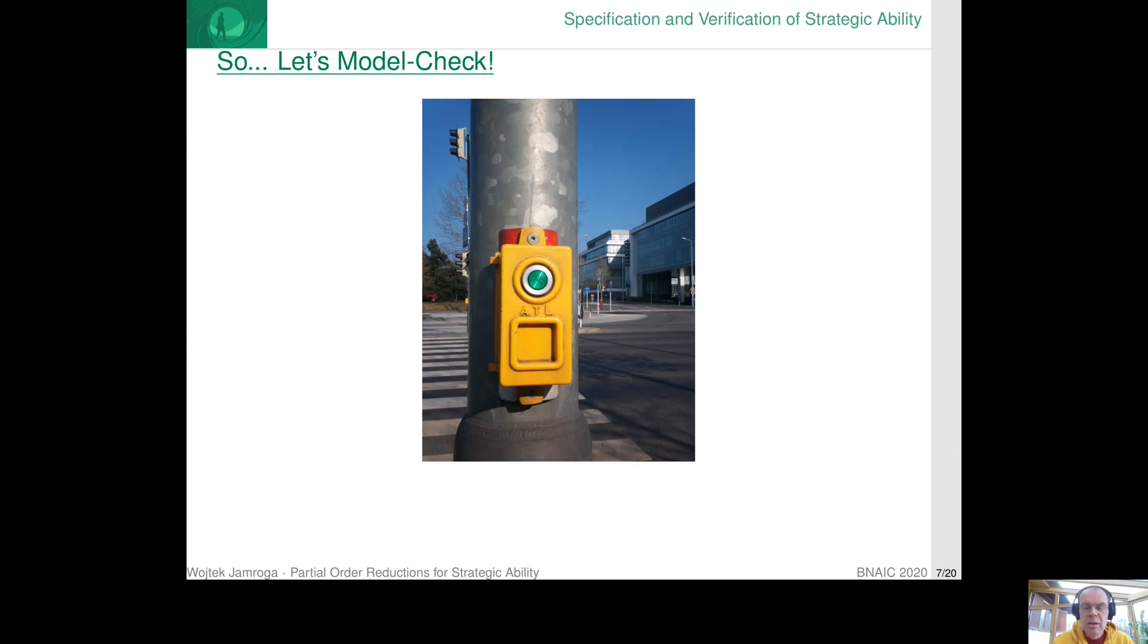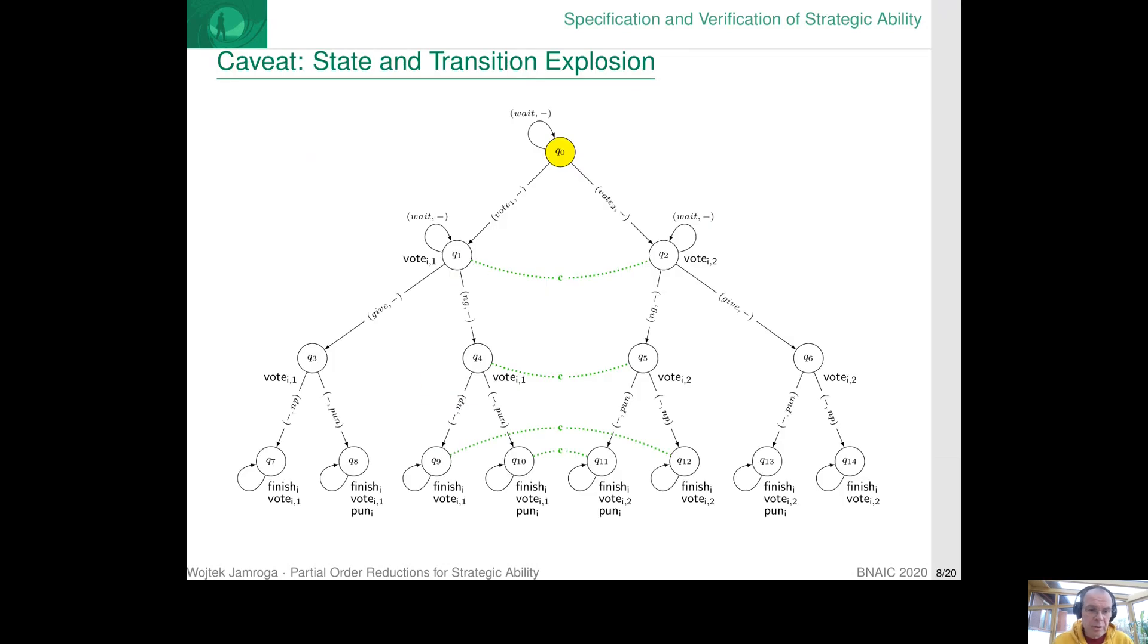So ideally, we would like to have an algorithm where we feed as the input the formula, the model, we press the button, and then we get the answer yes or no, the formula is true or the formula is false in the given model. Unfortunately, there are several serious obstacles, and probably the most important of those is so-called state and transition explosion.